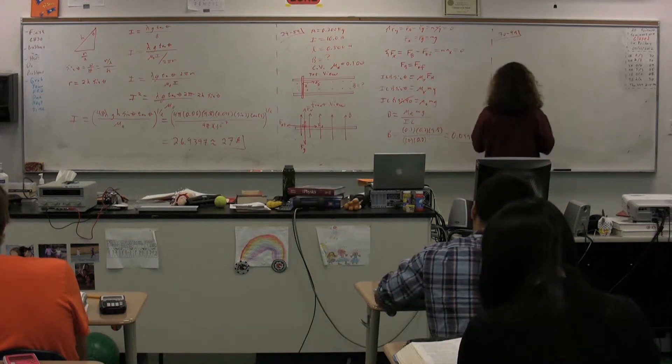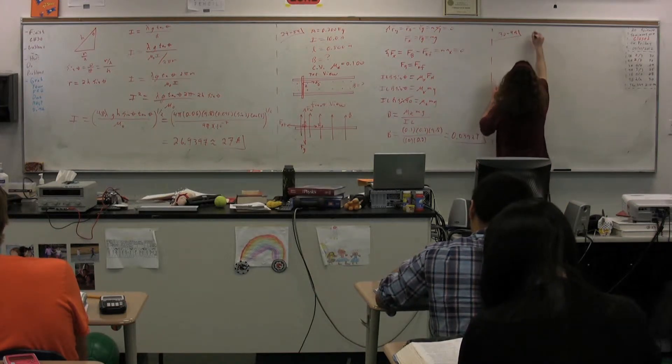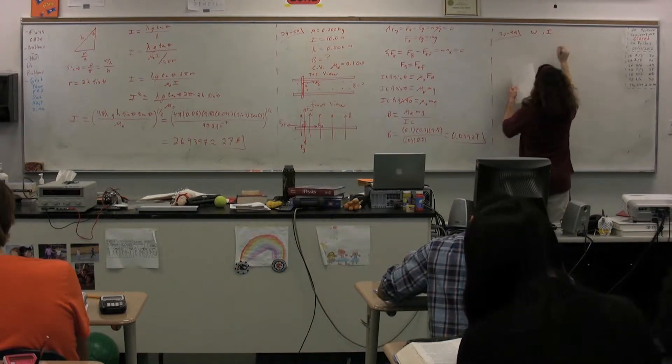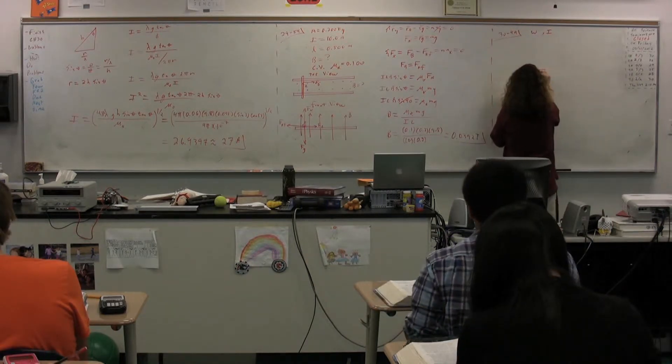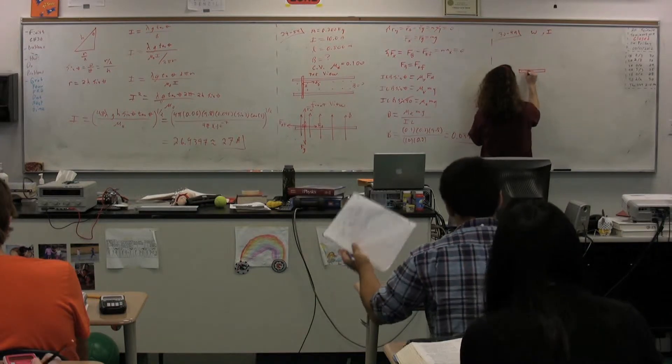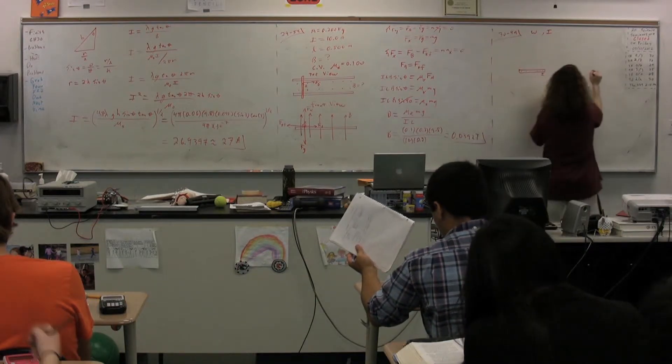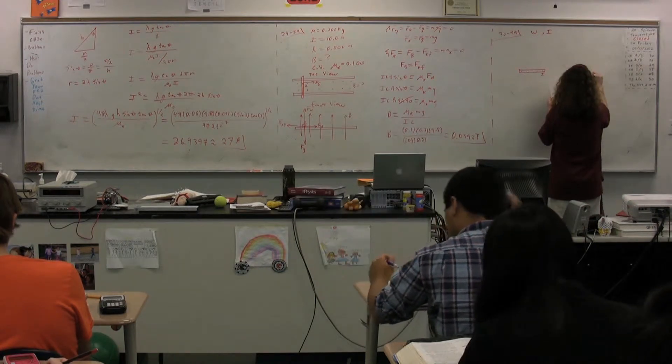A very long, thin strip of metal of width W carries a current I along its length, as shown in figure P30.49. Find the magnetic field at the point B in the diagram. The point B is in the plane of the strip at distance B away from it.